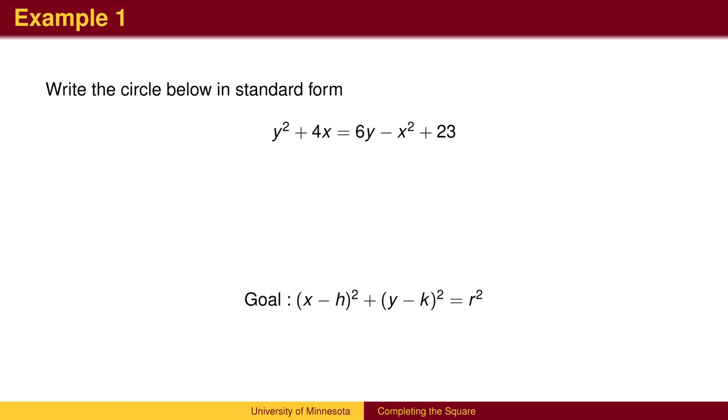We will use a five-step process called completing the square. The idea is to supply missing constants that allow us to factor what remains as a perfect square.